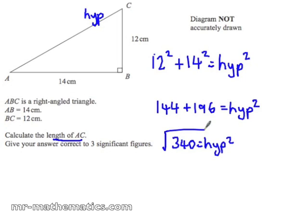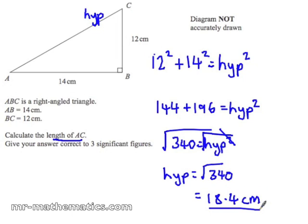So if we square root both sides, the square and the square root will cancel. So the hypotenuse is the square root of 340, which is 18.4 centimeters to 3 significant figures.